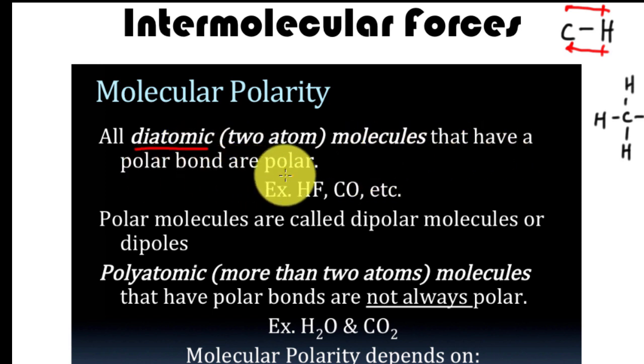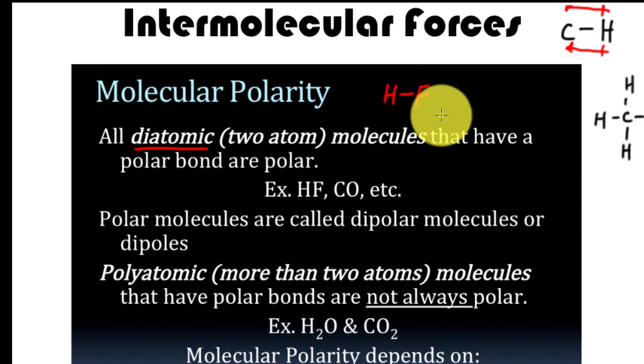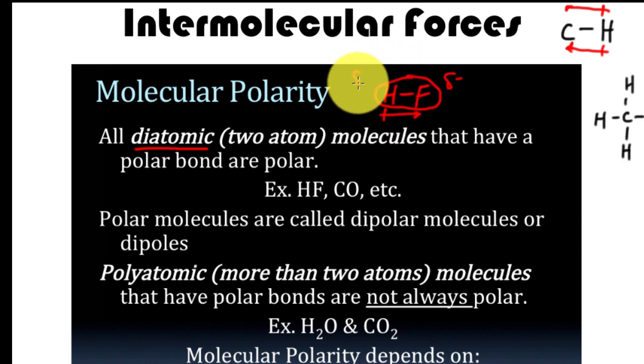Molecules that have a polar bond are polar. So if I have a two atom, it's as simple as this. If I have two atoms like hydrogen and fluorine, they're going to have a difference in electronegativity. Two atoms is essentially what we were looking at earlier. So that would mean that the molecule, hydrogen fluoride, is a polar molecule. It's a partial negative and a partial positive charge.